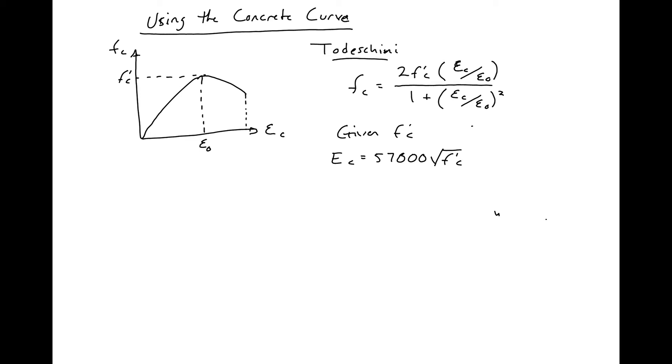Then using these two values we can find our epsilon naught, or our strain at ultimate stress, which is just equal to 1.71 times f'c over Ec using Todeschini.